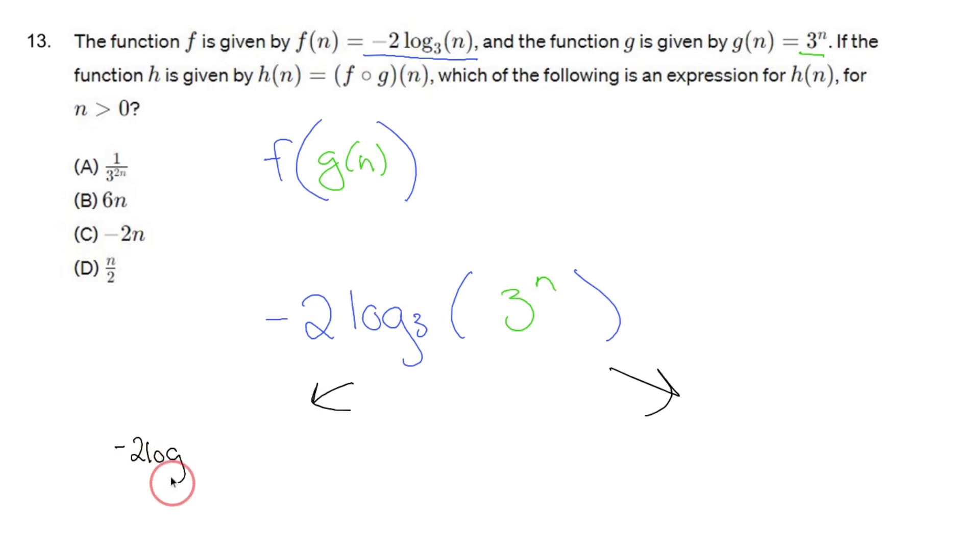Way number one that you can look at this is you could say, oh wait a minute, log base 3 of 3 to the n allows the log base 3 and the 3 to cancel each other out and drops the n down, so we have negative 2n. That's one way of looking at it.